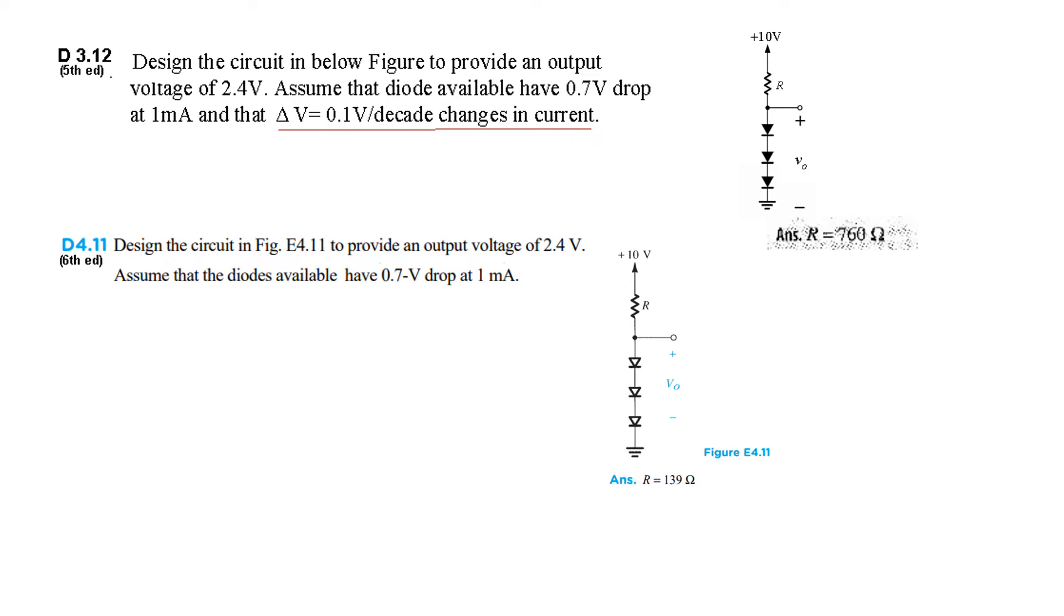In the 5th edition, design the circuit in the figure below to give an output voltage of 2.4V. Assume that the diode available is 0.7V drop at 1mA. But with the first question, there is additional information that delta V, the change in voltage, is equal to 0.1V per decade changes in current. Because of this, the answer is different.